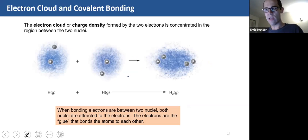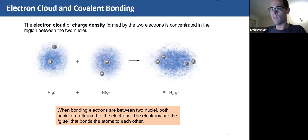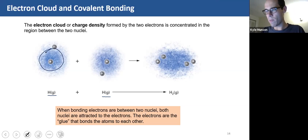So electron cloud and covalent bonding. The electron cloud or charge density formed between the two electrons is concentrated in the region between the nuclei. Again, they're sharing the charges. They're sharing the electrons. So this is a hydrogen atom and a hydrogen atom on their own. And this is the electron density around the nucleus. And then when I put these two hydrogens together, so this is hydrogen number one, hydrogen number two, the electron density is now shared.